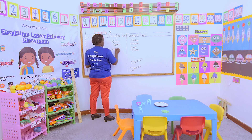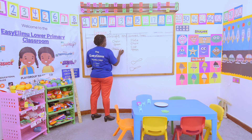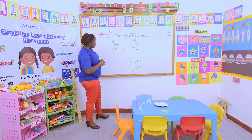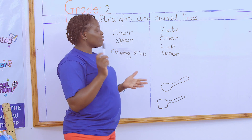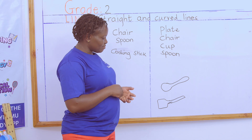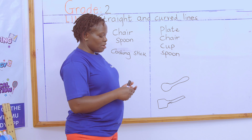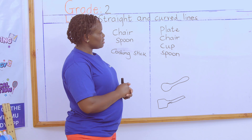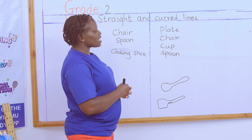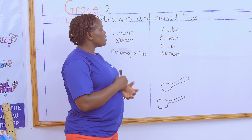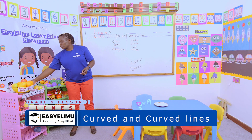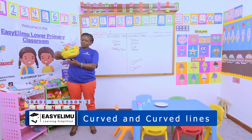When we go home, let us find out which utensils have straight lines and which utensils have curved lines. I want you to go home and model a plate, a chair, a spoon, a cooking stick — and see which shape they have. Even a bowl you can model and tell me which shape it is.